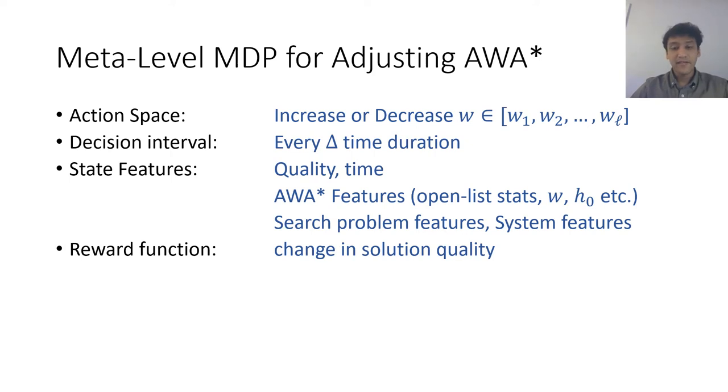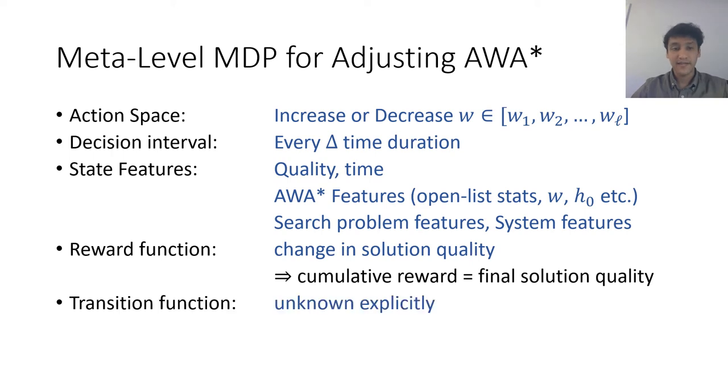The reward function is simply the change in solution quality due to increasing or decreasing the weight. That way the cumulative reward would be equal to the final solution quality which is our objective. The transition function is not known explicitly. That is why deep reinforcement learning is an ideal solution to solving this MDP.